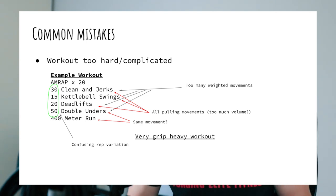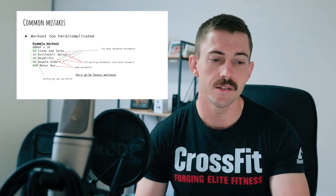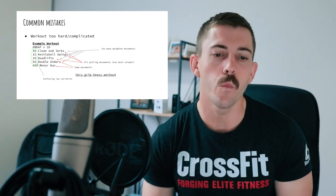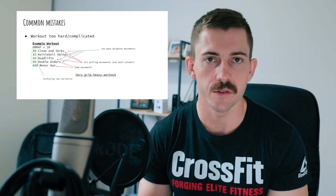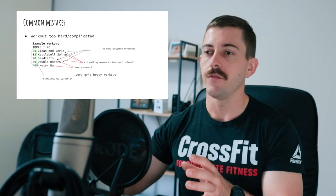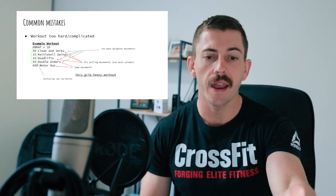Now let's jump into common mistakes. The first is when the workout becomes too hard or too complicated. A common example I see is programming too many weighted movements — having a kettlebell, dumbbell, and barbell all in the same workout. This puts way too much stress on your body and doesn't allow you to chop and change between movements to maintain a high heart rate effect without completely destroying your lower back.